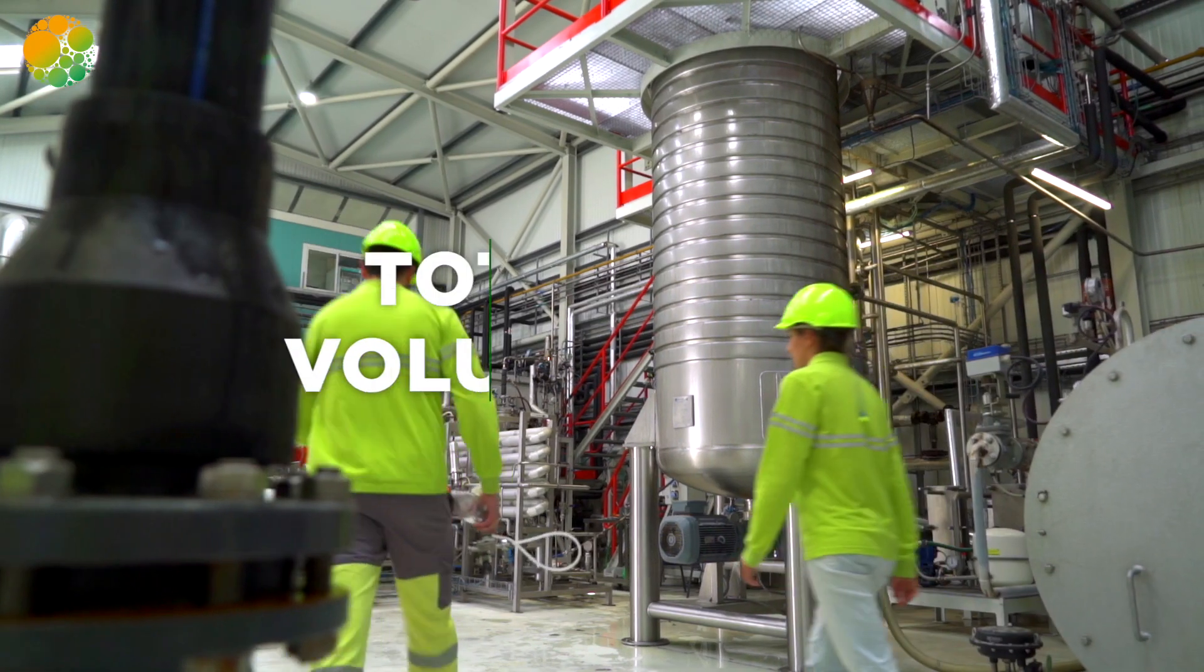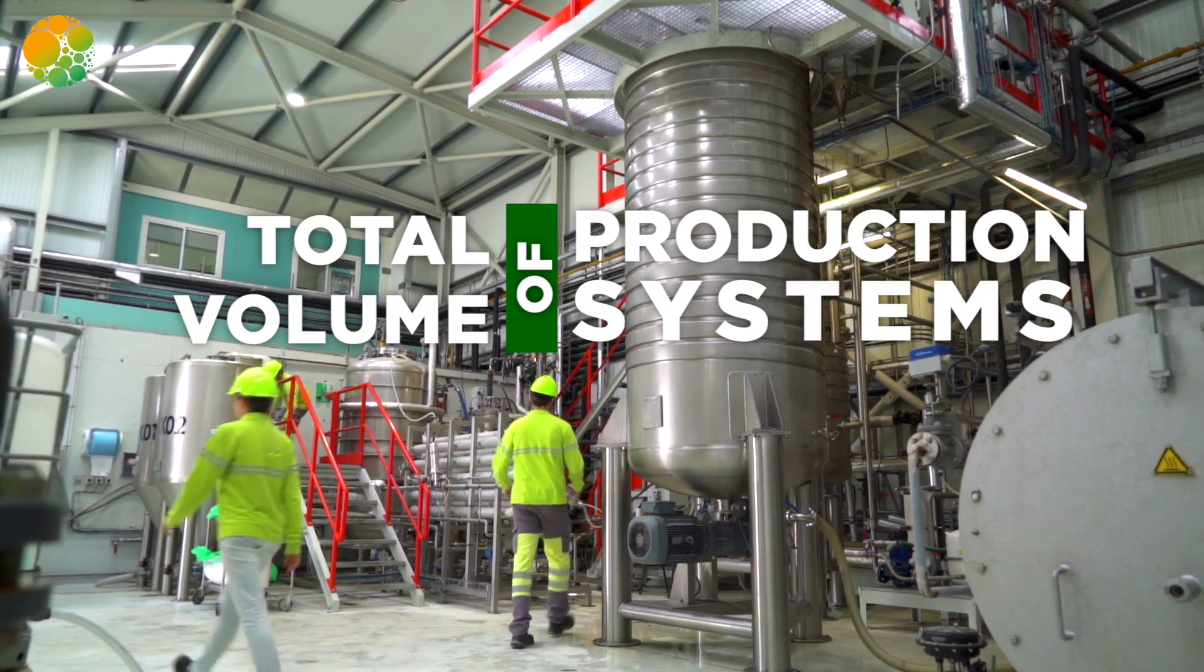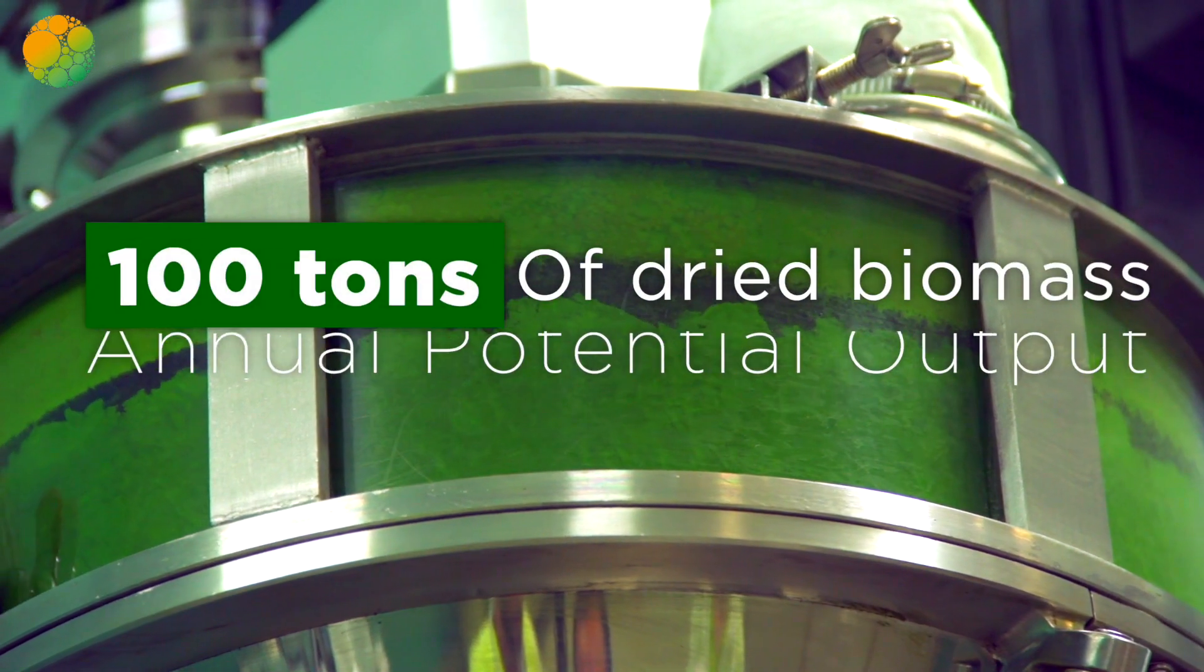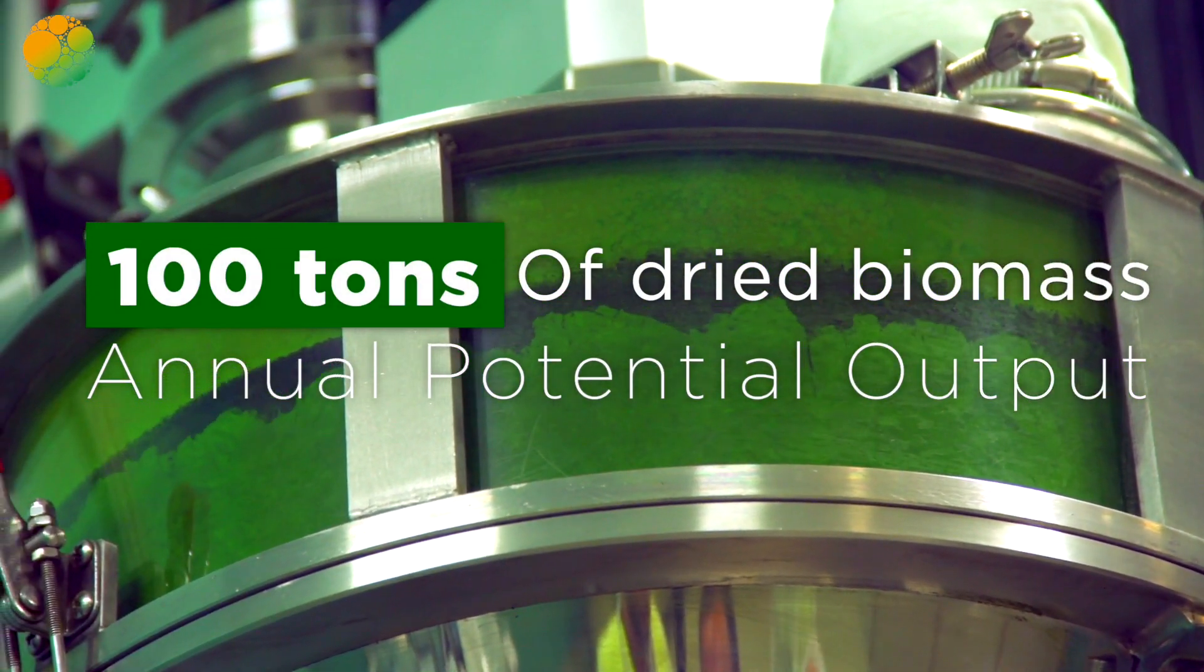Today, the total volume of the production systems in this unit is over 2,000 cubic metres, with an annual potential output of around 100 tonnes of dried biomass.